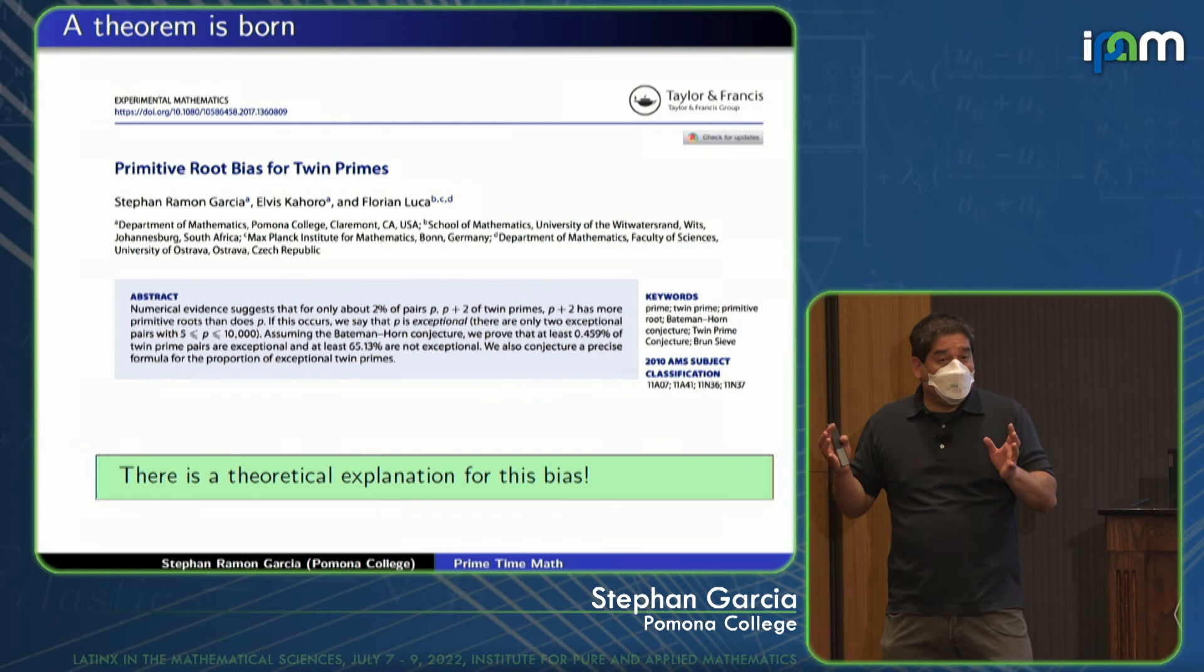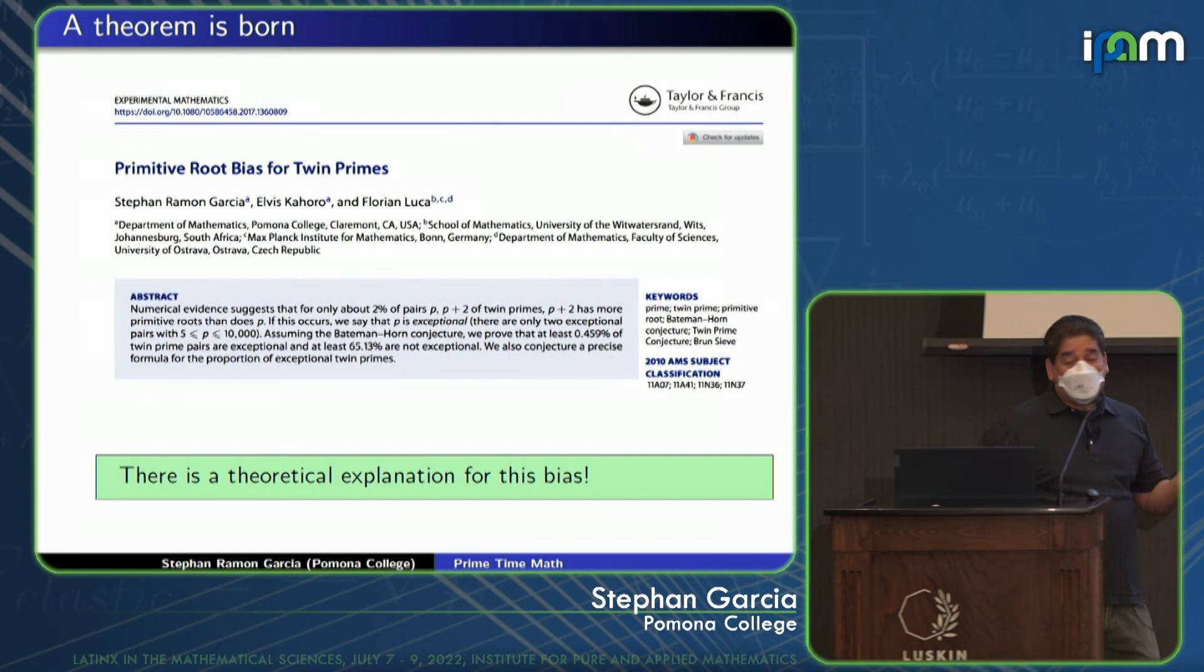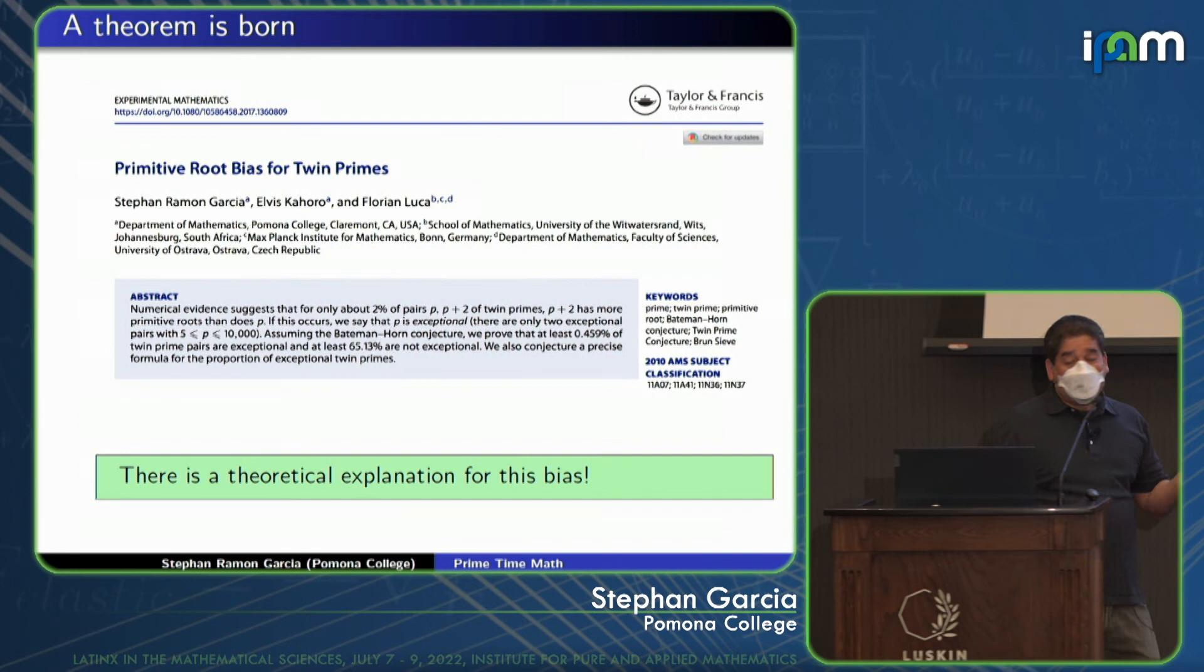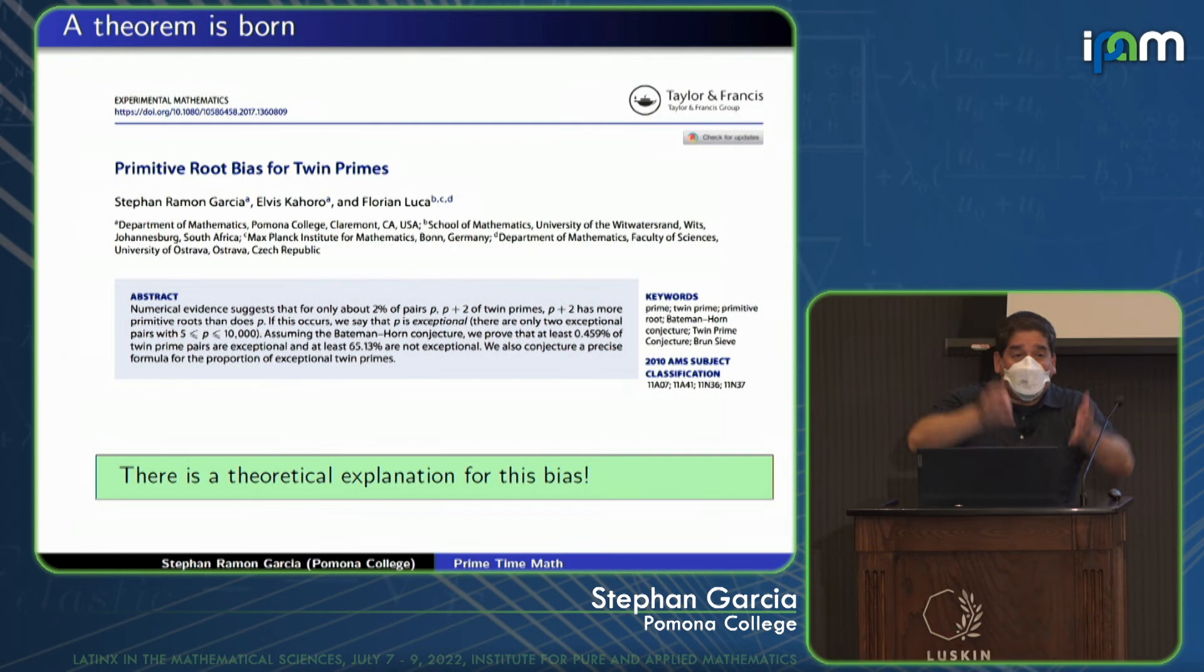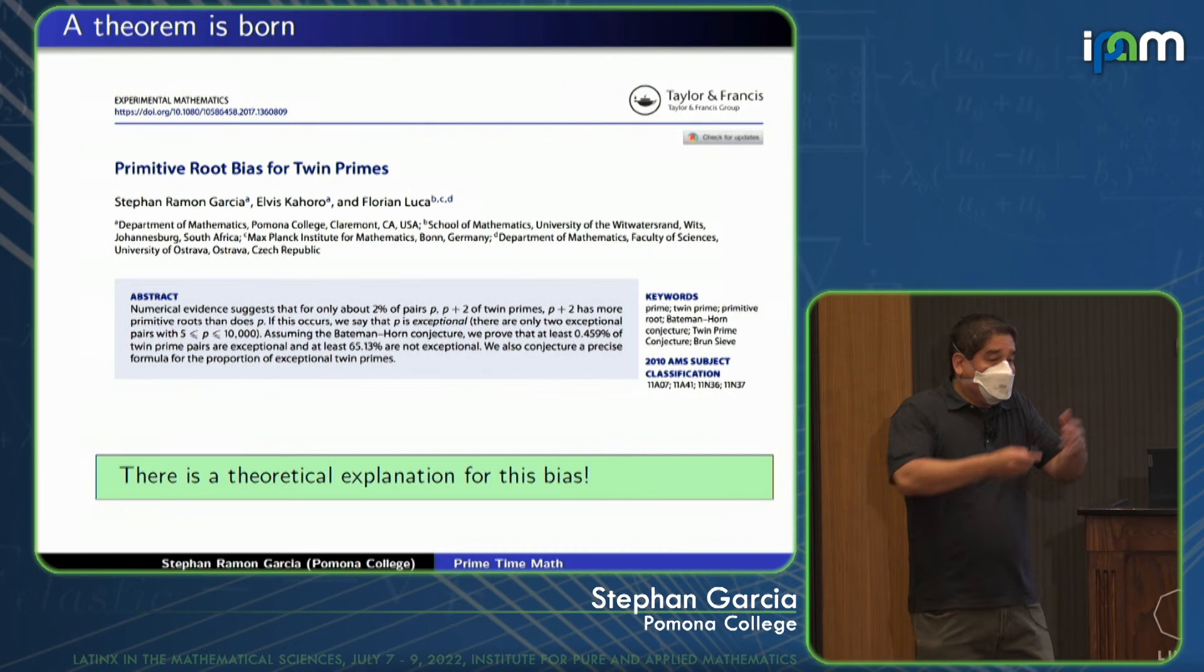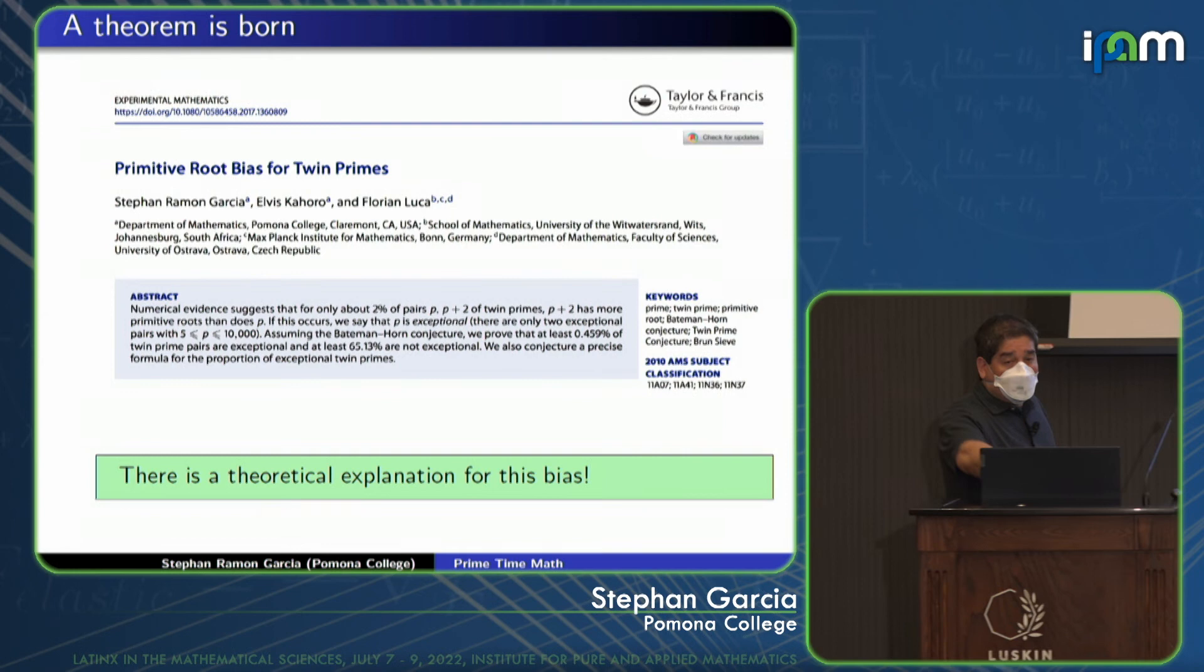We didn't prove that the 98% and 2% hold, but we did show that there is a bias. We have that there are at least 0.459% of the twin prime pairs out there are counterexamples. So it's not that there are finitely many counterexamples. There are infinitely many counterexamples. And in fact, a positive proportion of the twin primes form counterexamples to the conjecture. So this is what I mean by it's mostly true. And we can prove, at least under the Bateman-Horn conjecture, that the theorem is true an overwhelming number of the time. We got at least 65% of the time things work out. We don't have the 98% and 2%, but we've at least shown that these counterexamples are stubborn. And there are at least a fraction of a percent of the twin primes that are counterexamples.